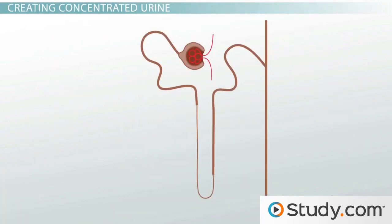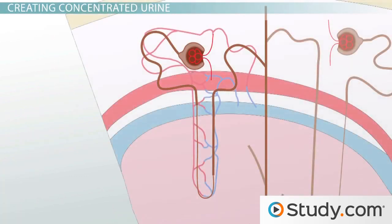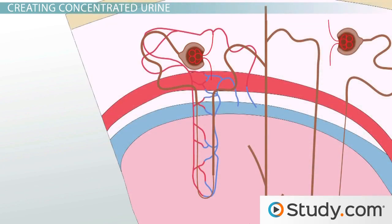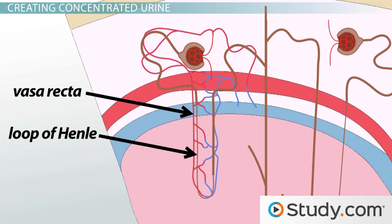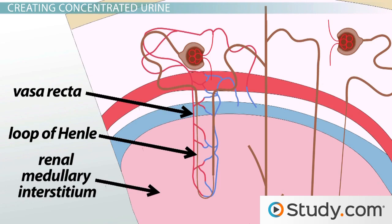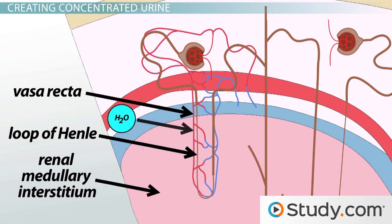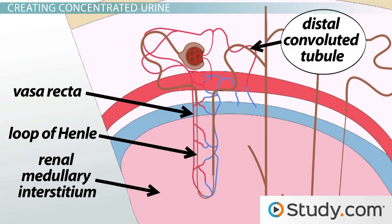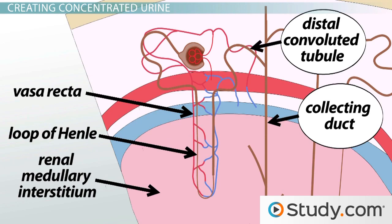One of the ways by which this is accomplished is through a counter-current exchange system between a structure called the vasa recta and the loop of Henle. This system helps to concentrate urine in the renal medullary interstitium — the tissue surrounding the loop of Henle — in order to help move water out of the renal tubule and back into the bloodstream. By the time the filtrate enters the distal convoluted tubule and the collecting duct, the remaining filtrate is hypotonic, or dilute.